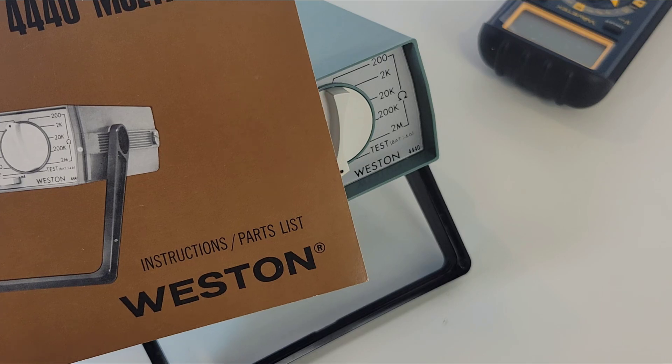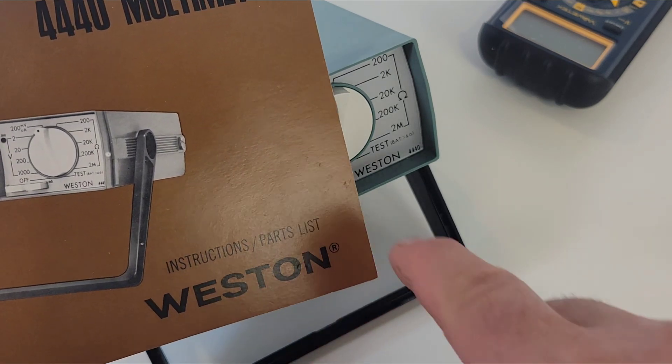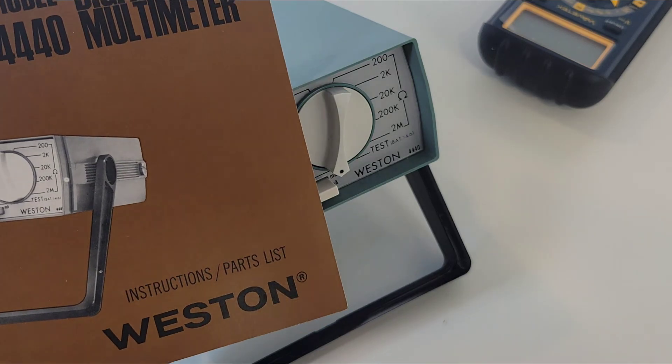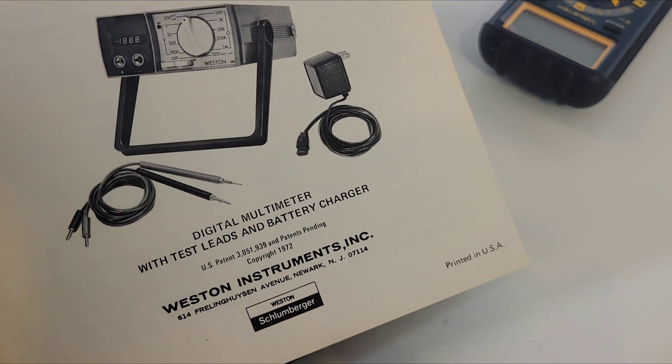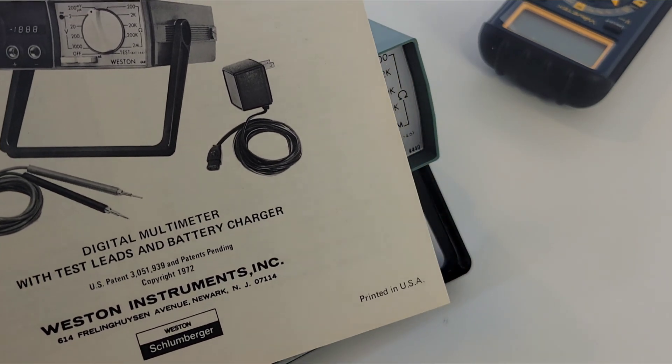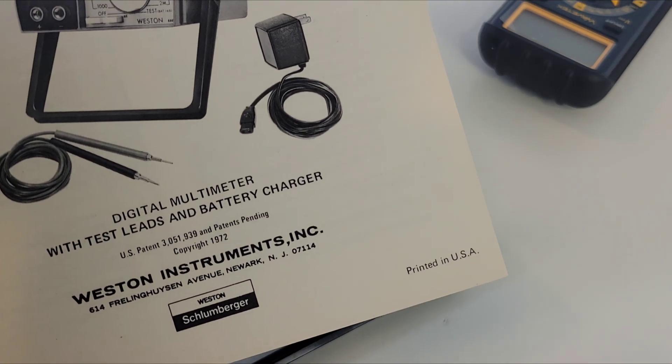Check this out. This is the Weston instructions slash part list. Good luck trying to find that on a multimeter manual these days. Look at that. Copyright 1972. 51 years ago. Weston Schlumberger. This thing is old.